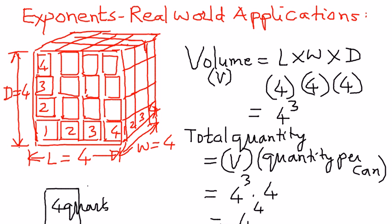Let us recap. This is a real-world application problem. I saw a crate on the floor of a store — four cans long, four cans wide, and four cans deep. I wanted to figure out how much milk is in that crate. I remembered I can use exponents here, so I wanted to find the volume and then multiply that by the quantity per can.